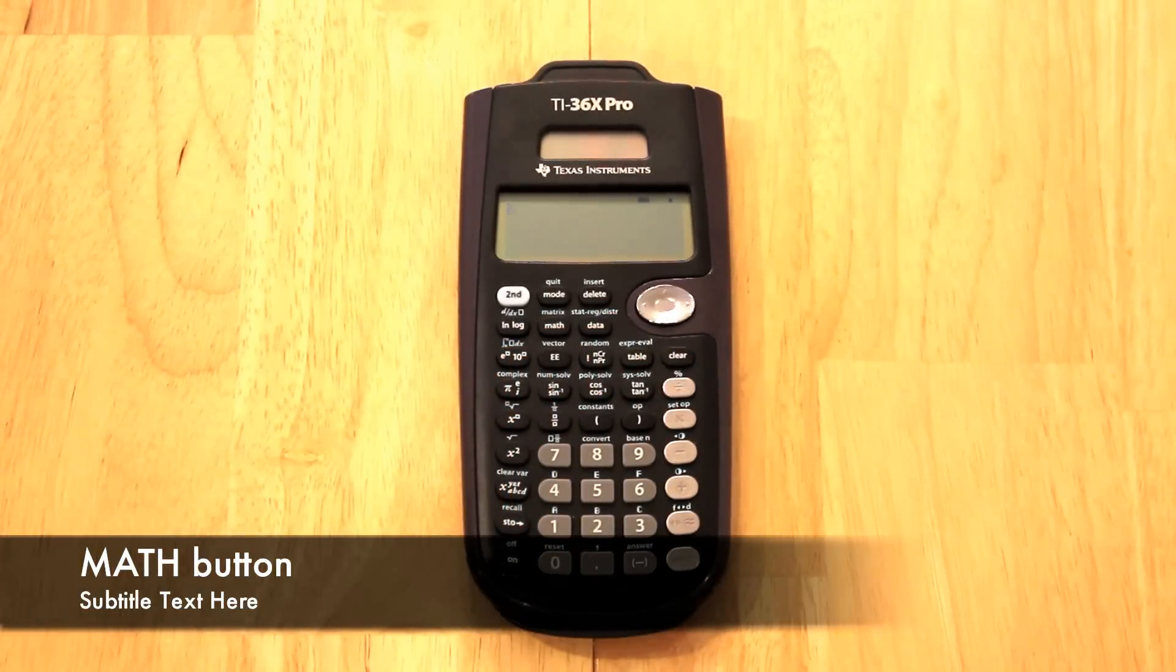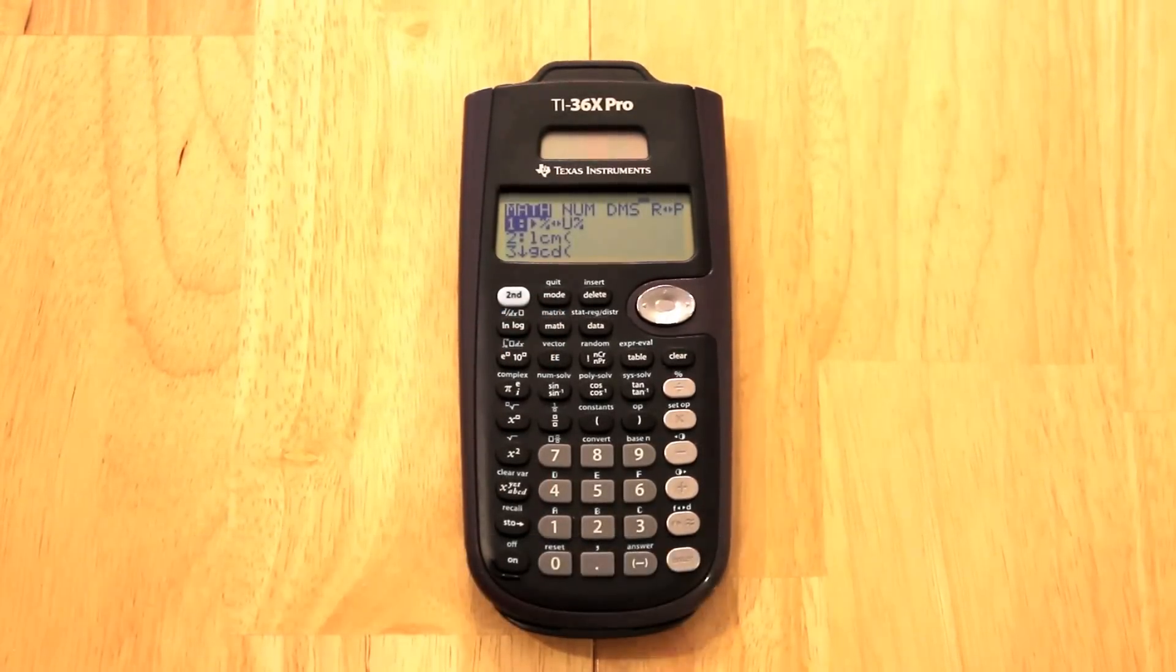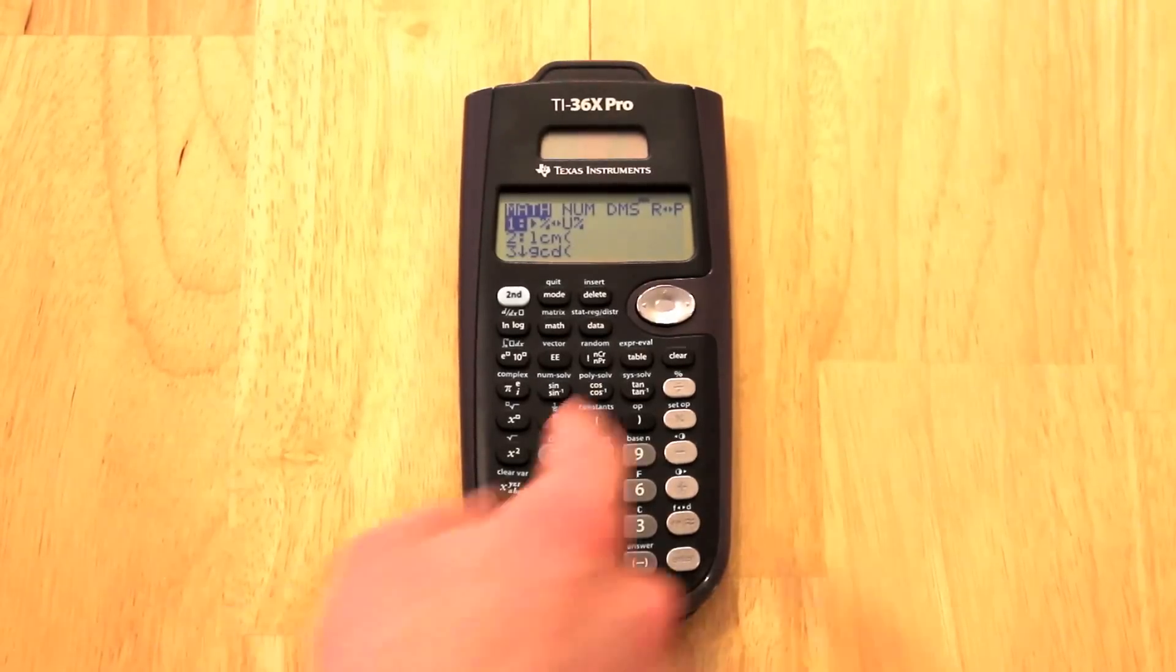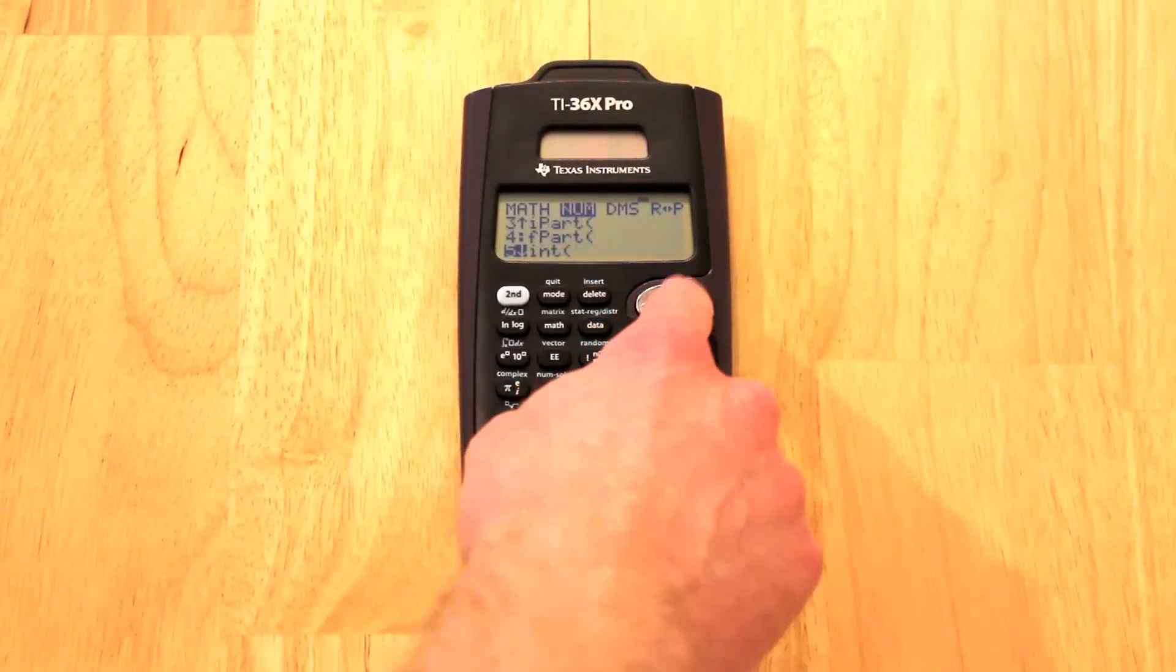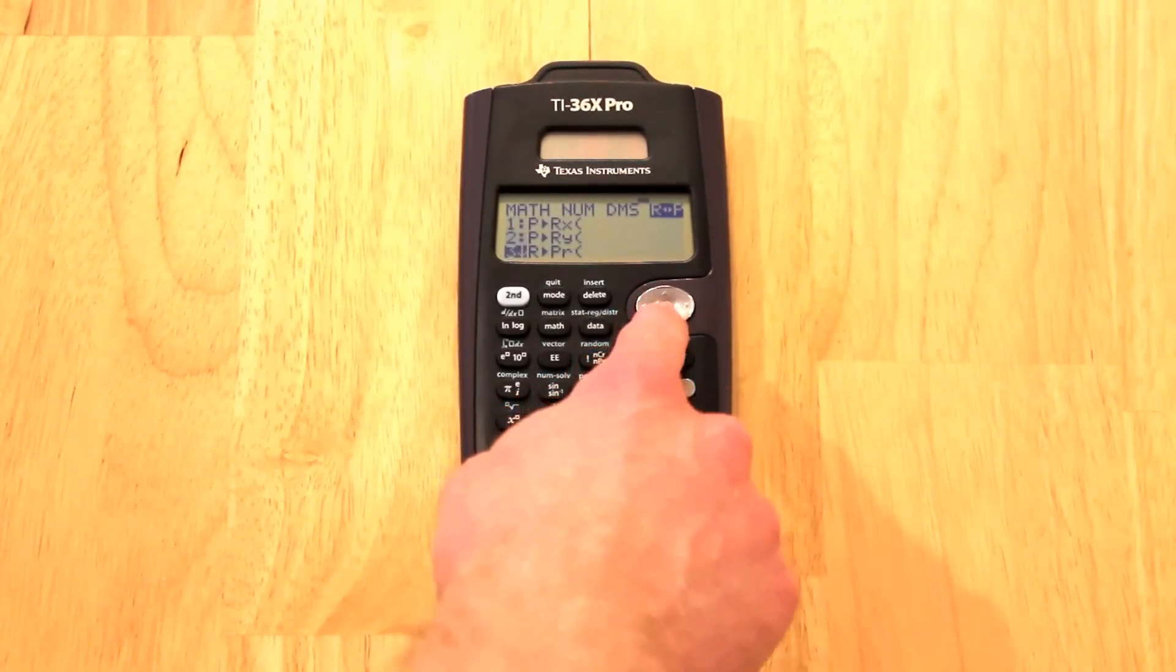I just want to click on, show you a few other functions under the math button, some options you have. This is very similar to the other TI-89 style menu systems where you can scroll down and across to access different functions. I'll give you some examples of that.